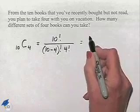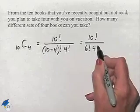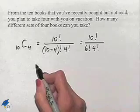That's going to equal 10 factorial divided by 6 factorial times 4 factorial.